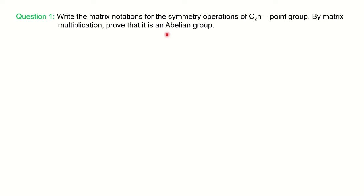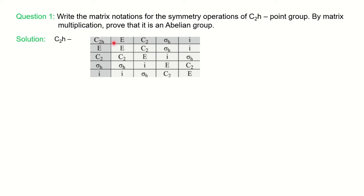They are asking us to write down the matrix notations for all symmetry operations of C2H, and then by matrix multiplication prove that it is an Abelian group. We need to know how many and which symmetry operations are present in C2H. For C2H: it has C2, σH (horizontal plane), and inversion — so there are four symmetry operations total including E.